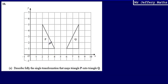So what I can see to get from P to Q is that this triangle P has been flipped over, or I can think of this as that it has been reflected. So what I can say is that it is a reflection.